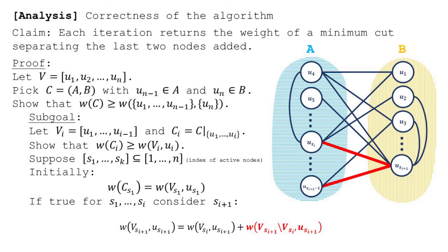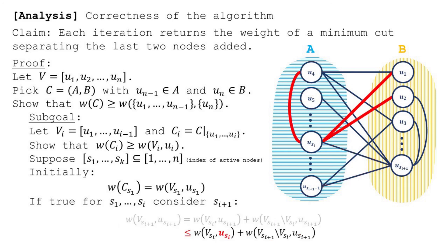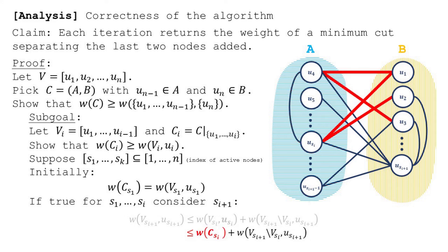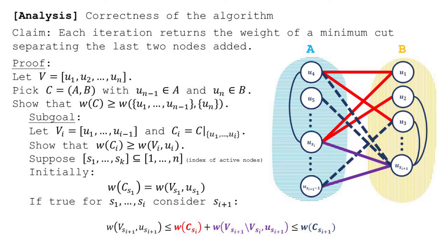Recall how the vertices were chosen: the weight of the edge to the previously added vertices is maximized. Thus the weight of the edges from u_{s_i} to V_{s_i} is at least the weight of the edges from u_{s_{i+1}} to V_{s_{i+1}}. By assumption this is at most the weight of C_{s_i}. The edges going between u_{s_{i+1}} and the vertices between u_{s_i} and u_{s_{i+1}}, plus the edges in C_{s_i}, are less than or equal to the edges in C_{s_{i+1}}. Thus the inequality holds for the (i+1)-th active vertex. By induction it holds for all active vertices, and in particular the last vertex added.